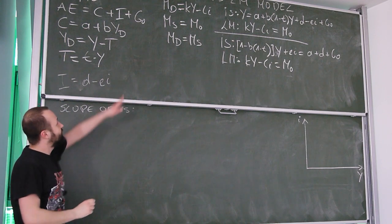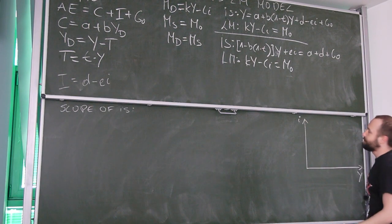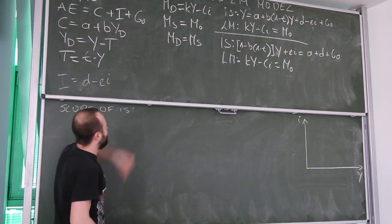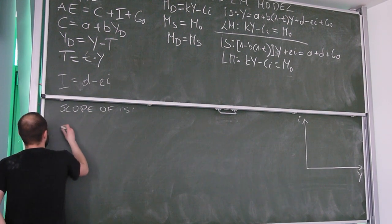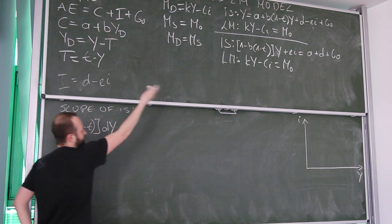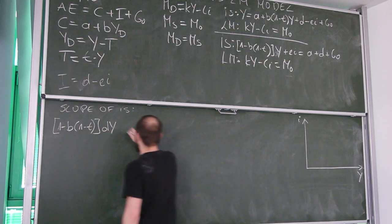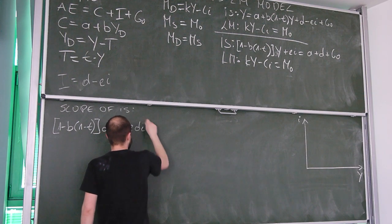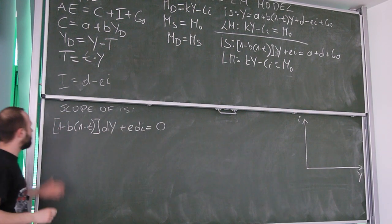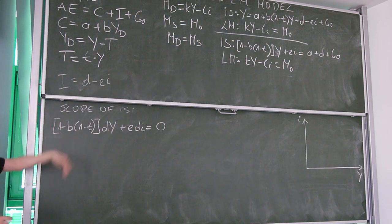I differentiate the IS equation with respect to all endogenous variables — income and interest rate. Differentiating the first expression gives (1 minus b)(1 minus t) dy. Differentiating with respect to i gives zero. The second expression differentiated with respect to interest rate gives plus e·di. All other expressions are constants, so their derivatives are zero. Now all we have to do is calculate di/dy by rearranging.